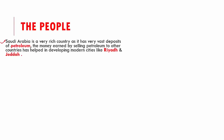Saudi Arabia is a very rich country, as it has vast deposits of petroleum — a natural resource the country earns money from by selling it to other countries. With that money, they have built modern cities like Riyadh and Jeddah, which have all modern facilities and a high standard of living.